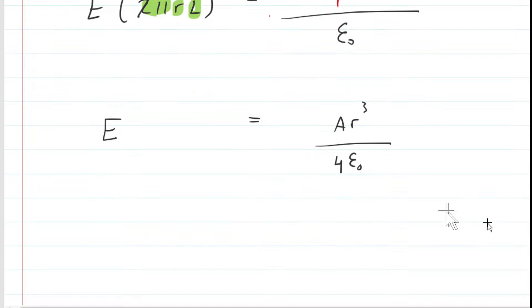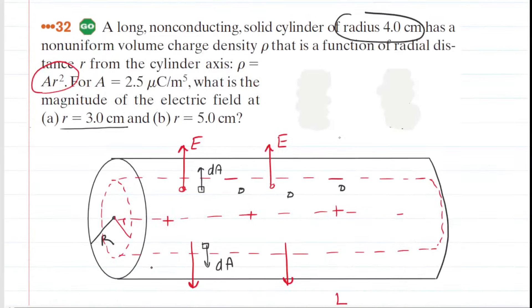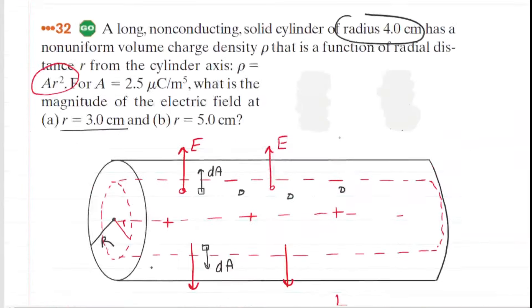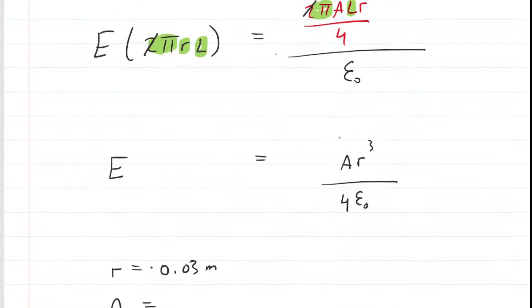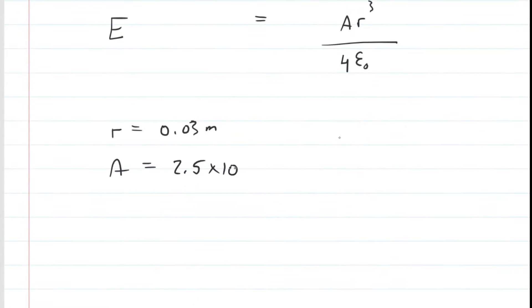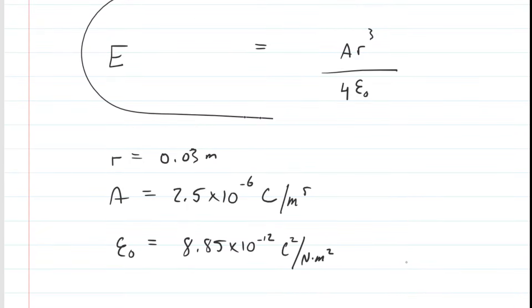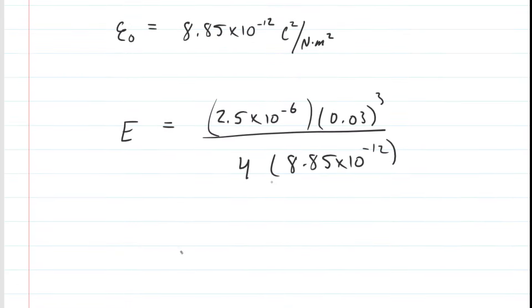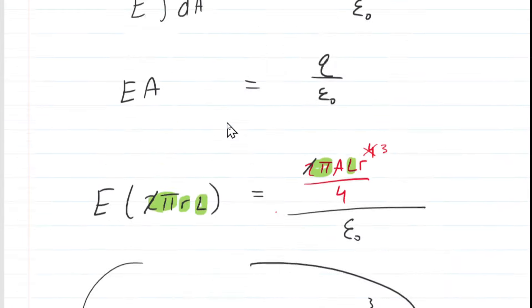Now we plug in the data. The radius of our Gaussian cylinder is 3 centimeters, or 0.03 meters. A was given as 2.5 microcoulombs per meter to the fifth, which is 2.5 × 10⁻⁶. The value of ε₀ is a known constant. Plugging these into E = A·r³ / (4ε₀), we get approximately 1.91 newtons per coulomb. That is the correct answer to Part A.